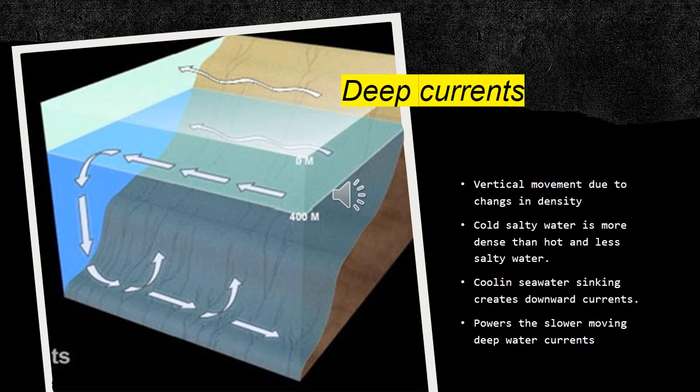So our surface currents are created by wind force and by the turning effect of the earth, but we also have deep water currents, and that is vertical movement of water due to changes in density. Cold and salty water is more dense than warm and fresh water, so if water cools down it will start sinking to the bottom, and when we do that it creates a push on the water further down, which really moved along like conveyor belt. So cooling seawater sink down creates what we call downward currents, and this creates our deep water currents which move slower than our surface currents, but are still very important for moving nutrients and water around the earth.